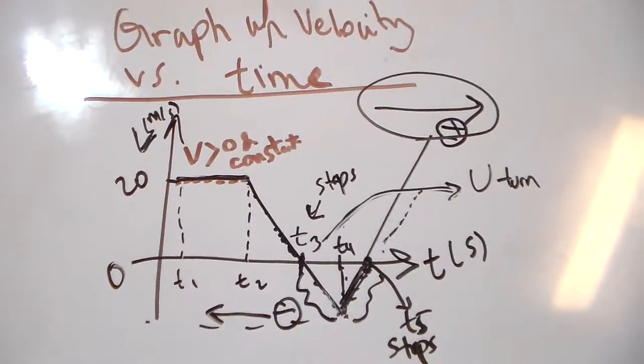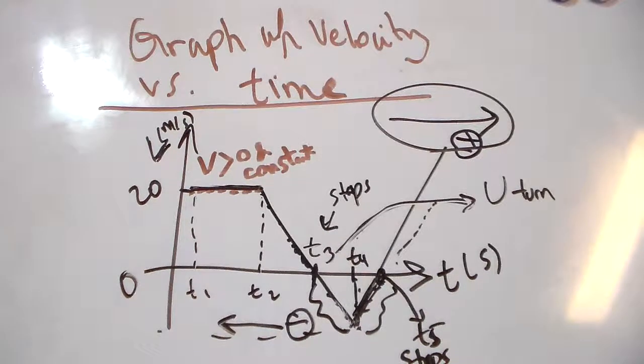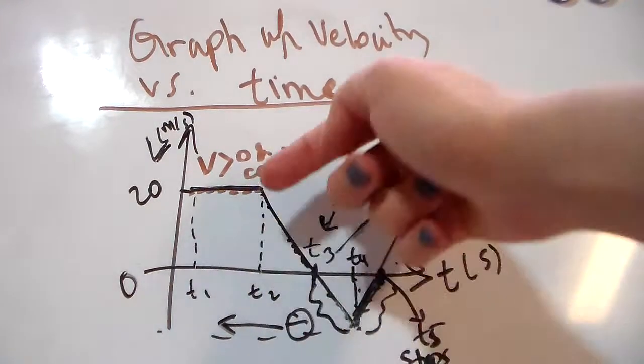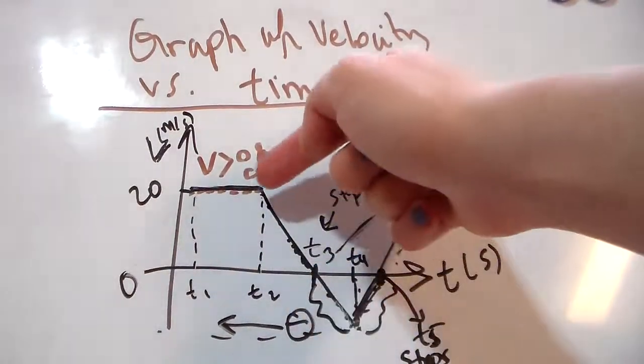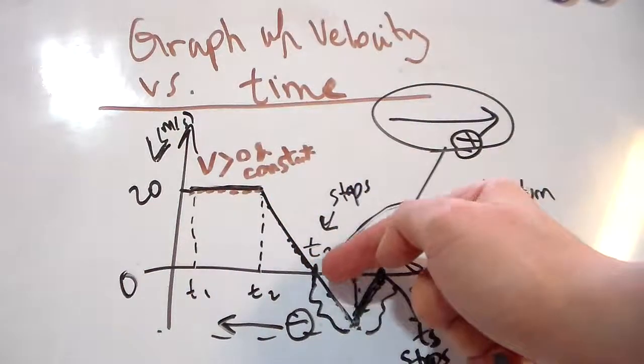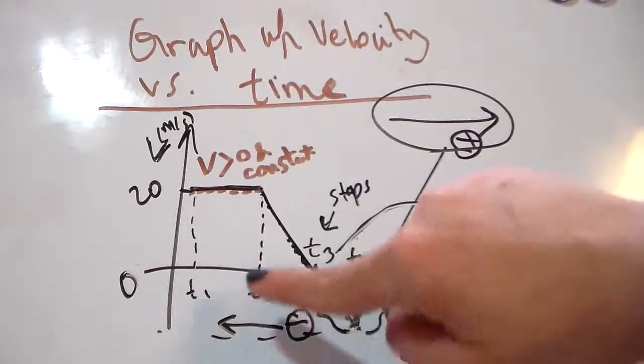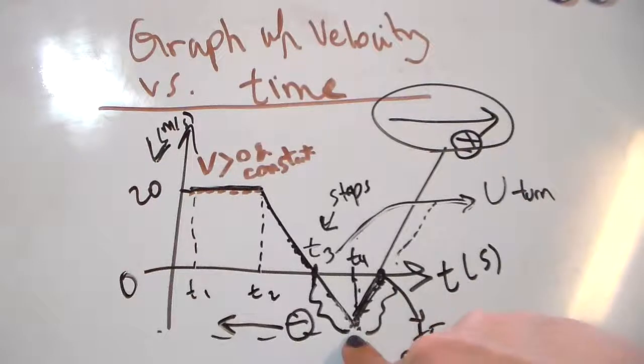So our motion starts with constant velocity, which means zero acceleration. Here, decreasing velocity and hitting zero is deceleration. Here, we make a U-turn, stop momentarily, then increase our velocity to a maximum at T4.